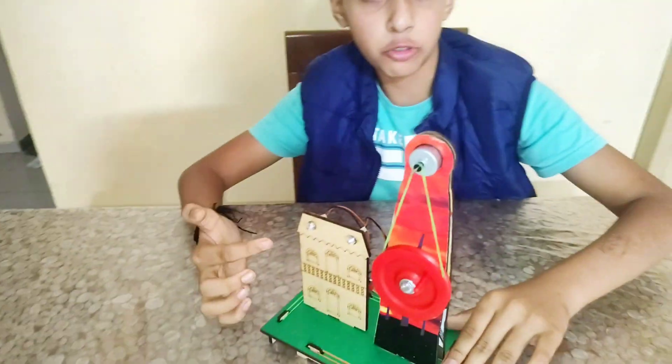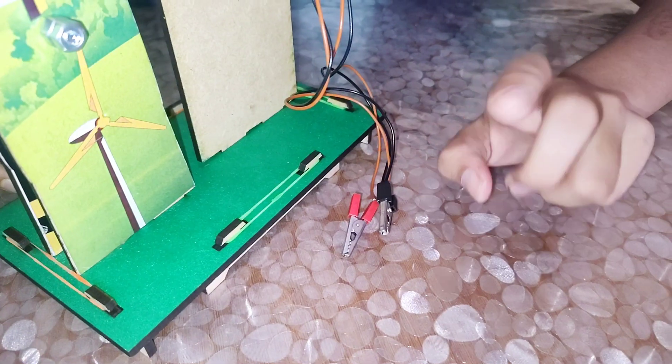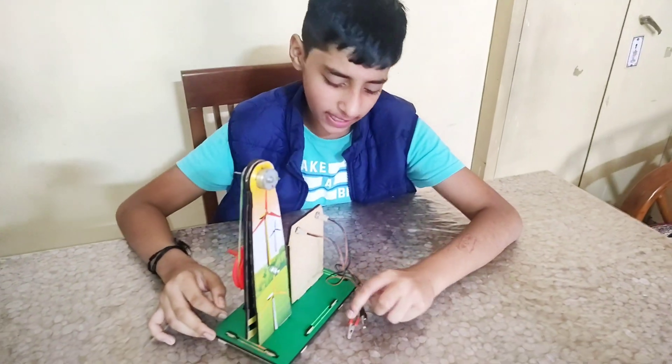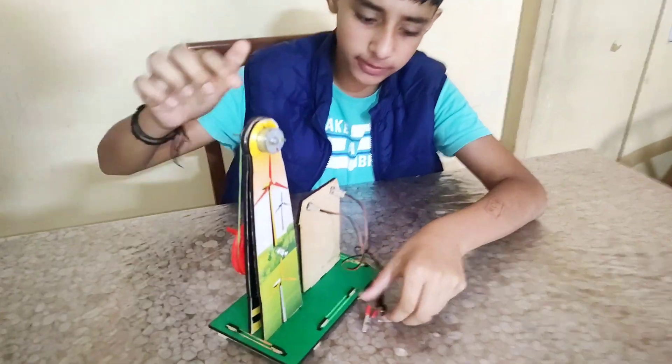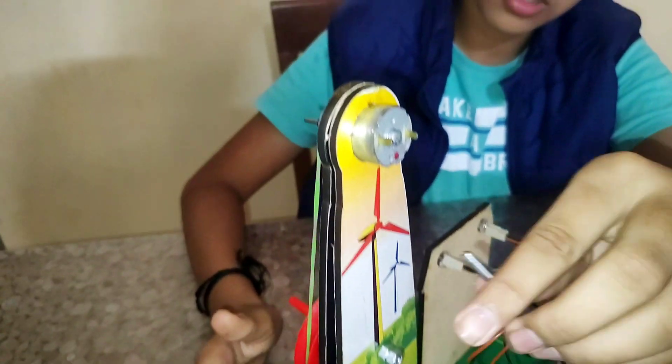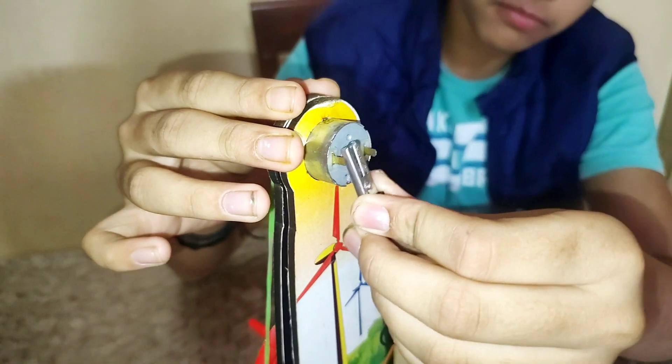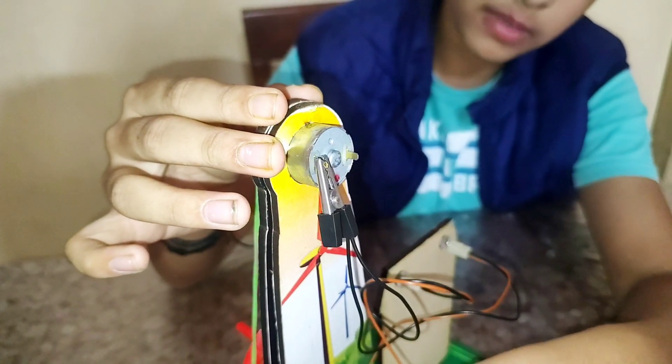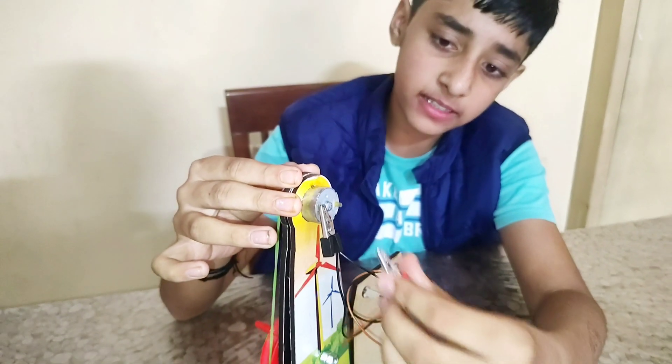Like this we need to put this light bulb. As I told, black means negative and red means positive. Black will be on the left and red will be on the right.